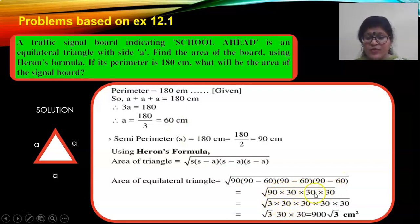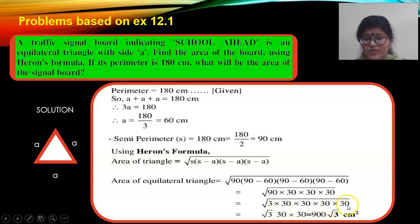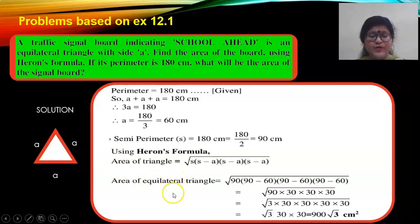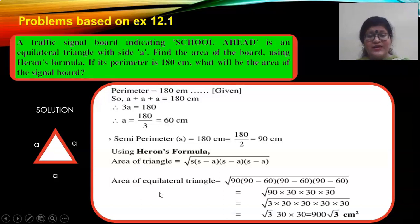Root 30 into root 30 gives 30, so 30 comes out. Write 90 as 30 into 3, so this root 30 and that root 30 give another 30. The answer is 900 root 3 — that is 900 root 3 centimeter square, which is the area of this equilateral triangle with perimeter 180 centimeters.